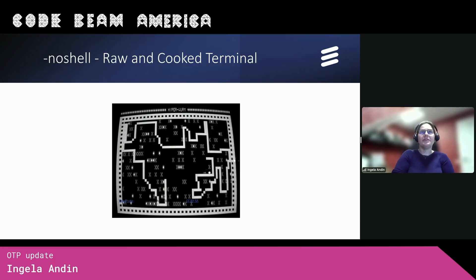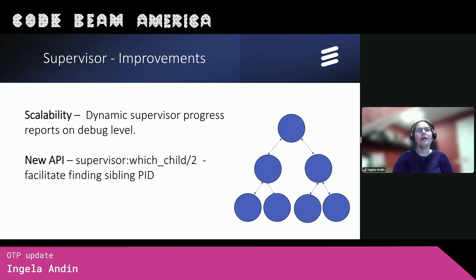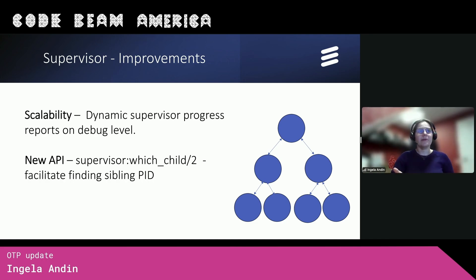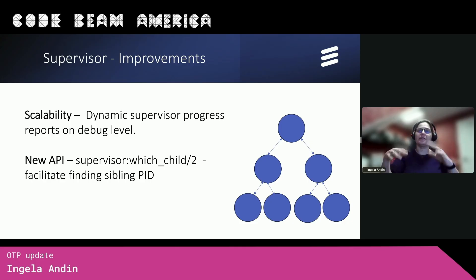When it comes to running Erlang without the shell, we now have a new raw mode. In this mode, it's possible to read keystrokes without the user having to press enter, and it will not be echoed. So now you will be able to write your own terminal snake game in Erlang. Dynamic supervisors — we have decided that their progress reports will be on the debug level. So if you have lots of TLS connections going up and down, you will no longer be spammed by progress reports. We also have a new API function for supervisors called which_child, which facilitates finding the process IDs of your siblings under the same supervisor.